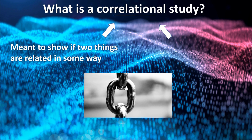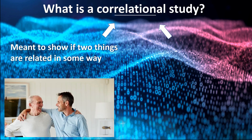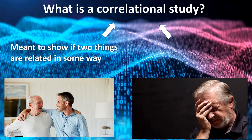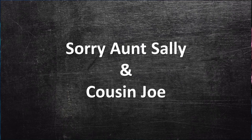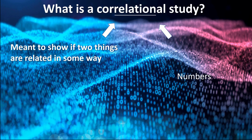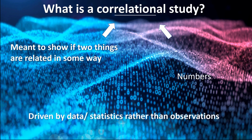It can be a strong relationship or a weak one. I like to think about people in my family — we're all related, but I have a stronger relationship with some family members and a weaker relationship with others. Every family has that Aunt Sally or Cousin Joe that folks just don't really talk about. The way we determine if variables are related and how strong that relationship is, is through numbers. Correlational studies are driven by data or statistics rather than physical observations like descriptive studies are.